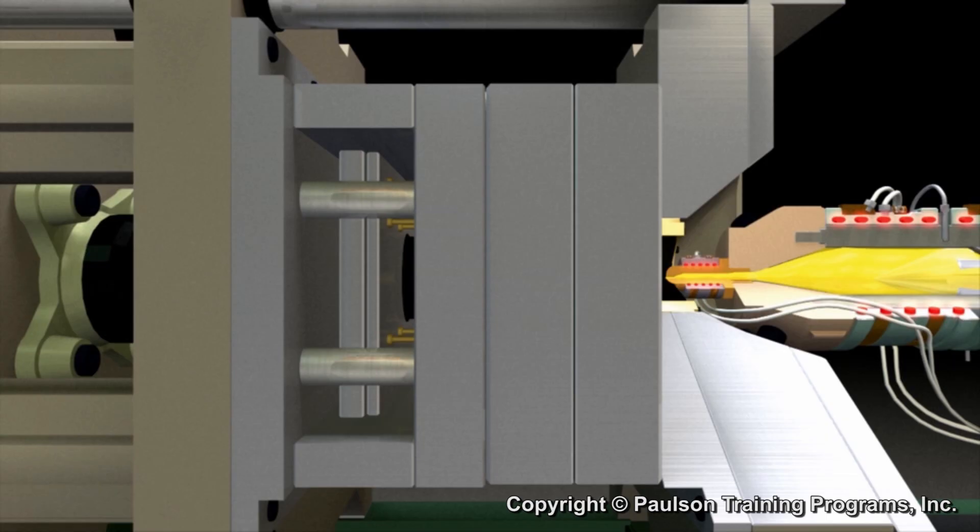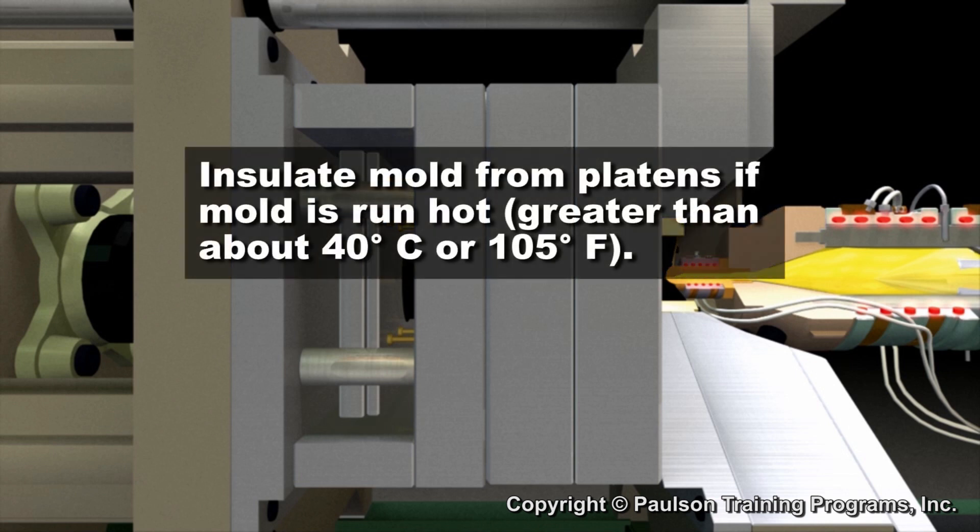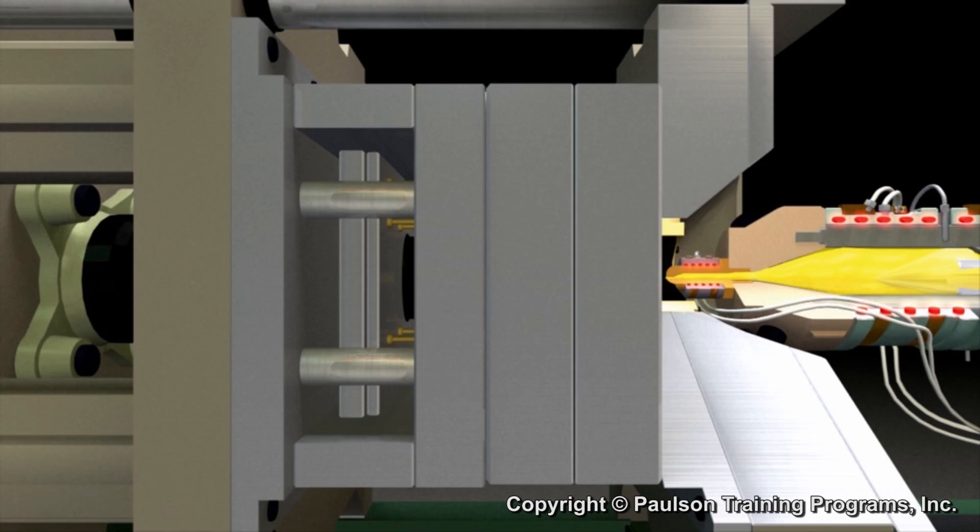If the mold is run hot, greater than about 40 degrees Celsius or 105 degrees Fahrenheit, it's a good idea to put insulation board between the mold and the machine platens. This reduces the temperature variation in the mold and also reduces the thermal expansion of the platens.